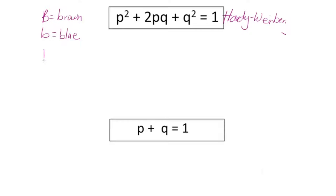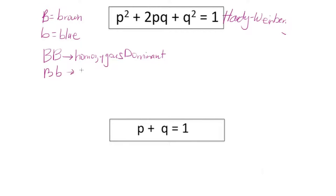Therefore, an individual can have multiple combinations of either the dominant or recessive form of the gene. An individual can have both alleles be dominant — big B, big B — and this would be called homozygous dominant because both alleles are dominant. An individual can be big B, little b, and in that case we would say that person is heterozygous, because they have one of each allele.